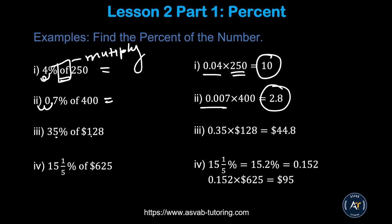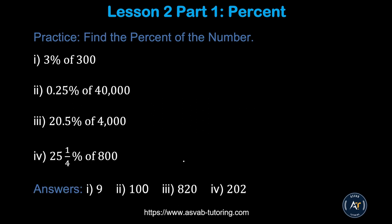For 35 percent of 120, do exactly the same way — you get 42. And 95 percent works the same way. Here are some practice problems — try them yourself and make sure you get the right answers. If you do, that means you're learning.